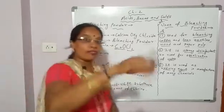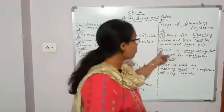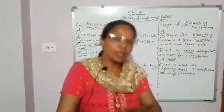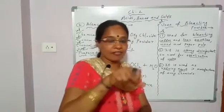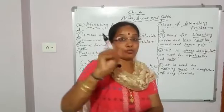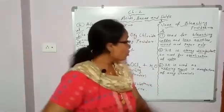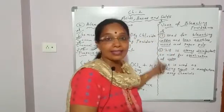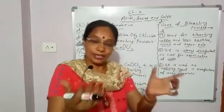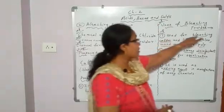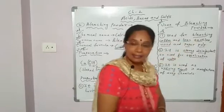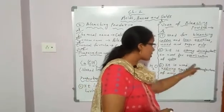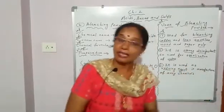Write any two uses of substance X — you can write any two uses, other than what is already given in the question. So since the question already mentions it is used for cleaning water storage tanks, don't write that use. Write some other use, for example: it is used as an oxidizing agent in the manufacture of many chemicals.